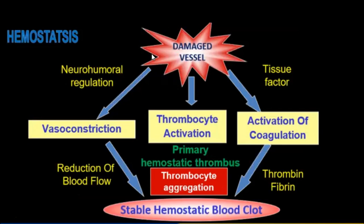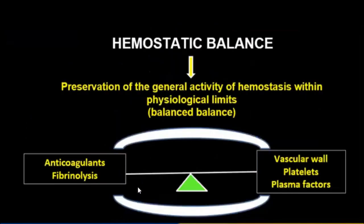Very important is neurohumoral regulation and tissue factors in hemostasis. The sequence involves vasoconstriction, thrombocyte activation, activation of coagulation, primary hemostatic thrombocyte aggregation, reduction of blood flow, thrombin, fibrin, and formation of a stable hemostatic blood clot. Hemostatic balance involves preservation of general activity of hemostasis within physiological limits, involving anticoagulants, fibrinolysis, vascular wall, platelets, and plasma.